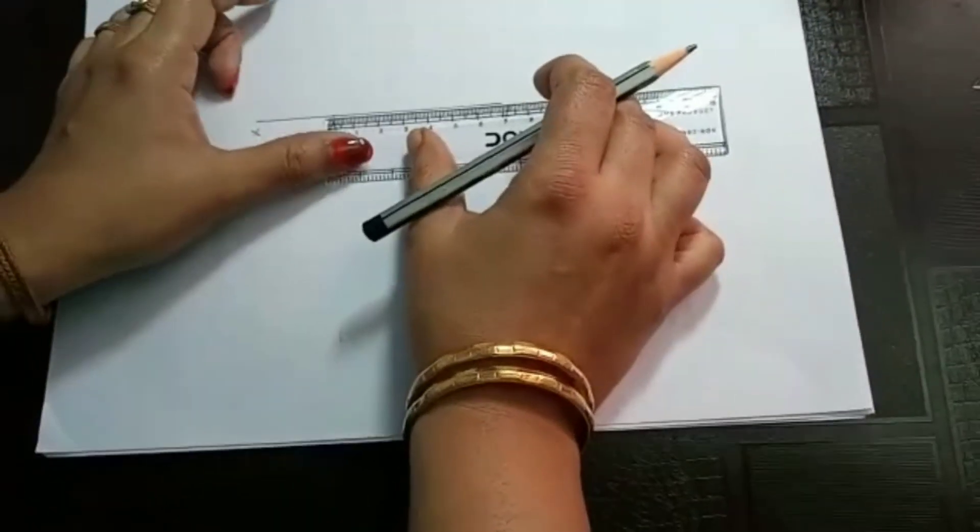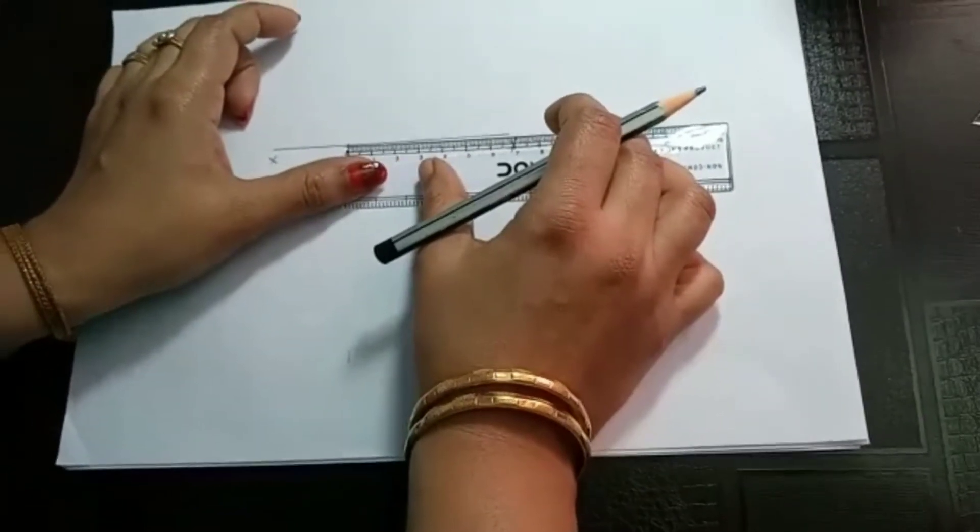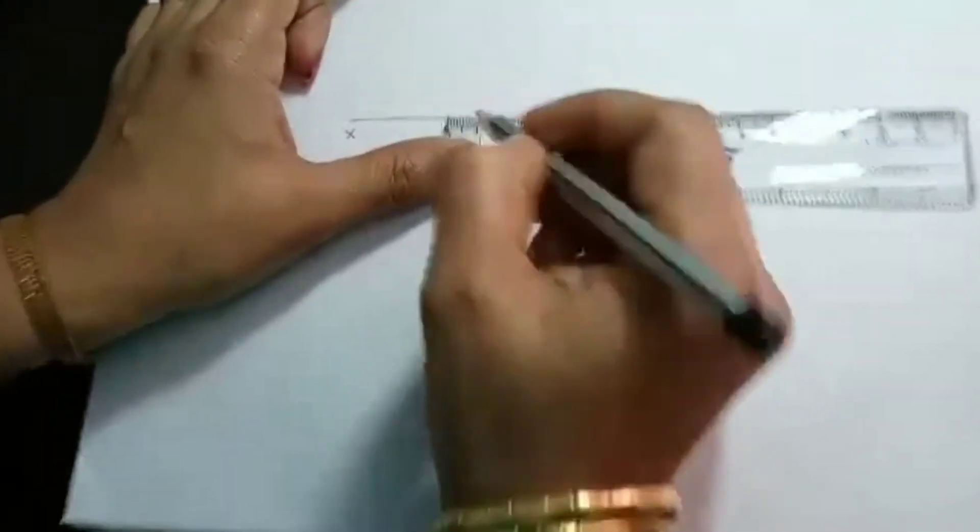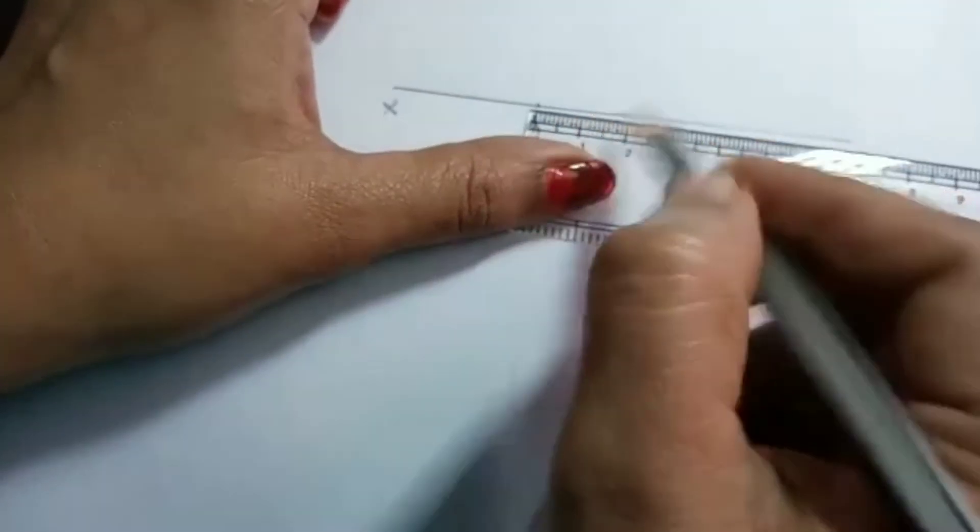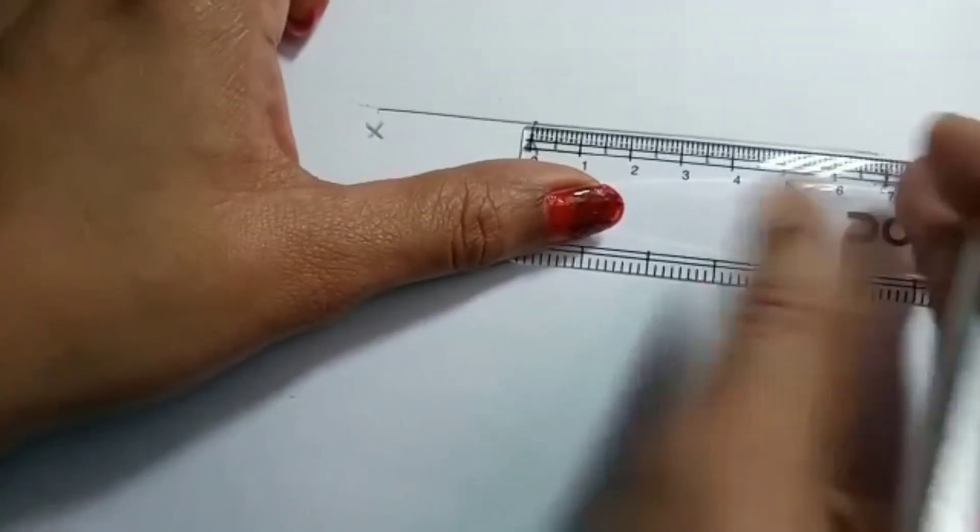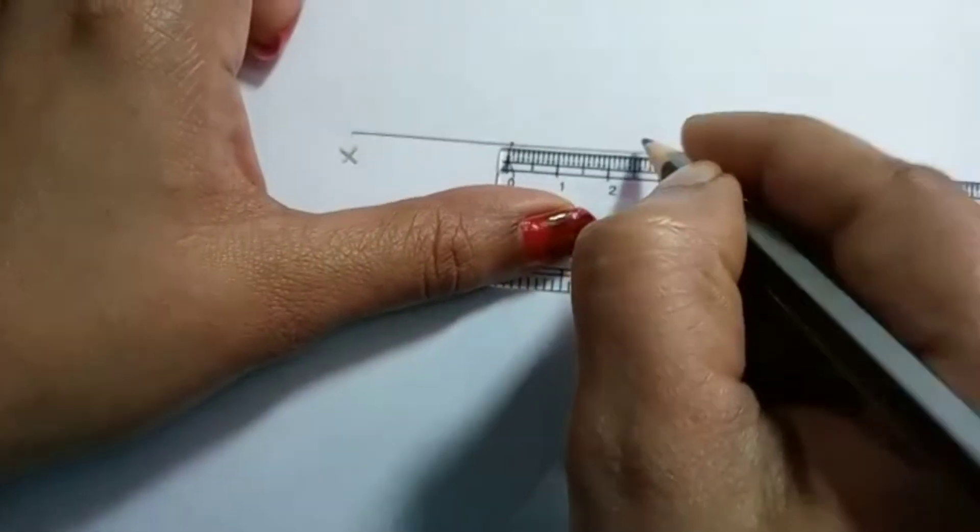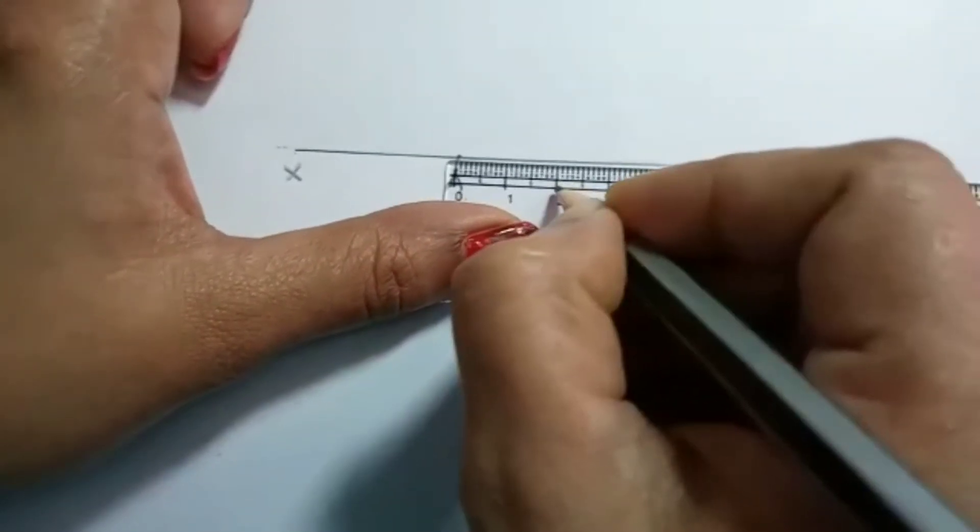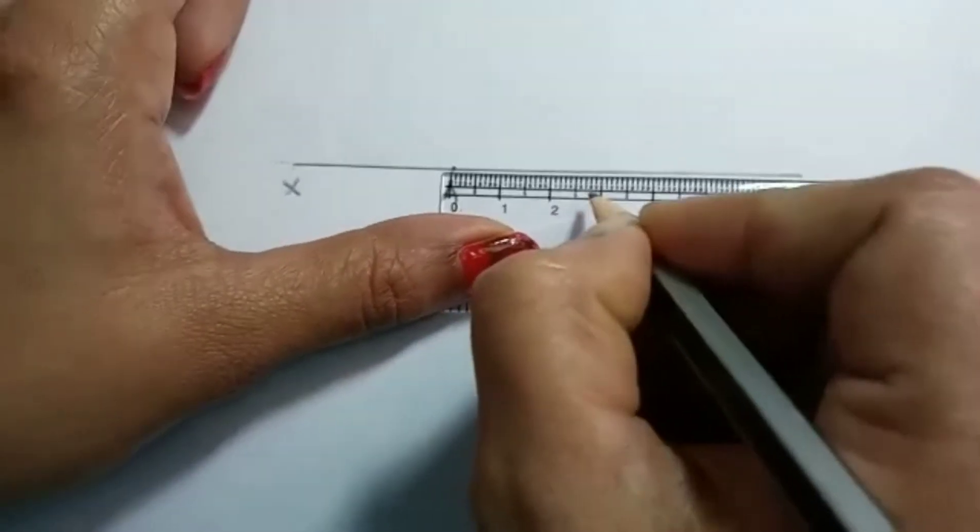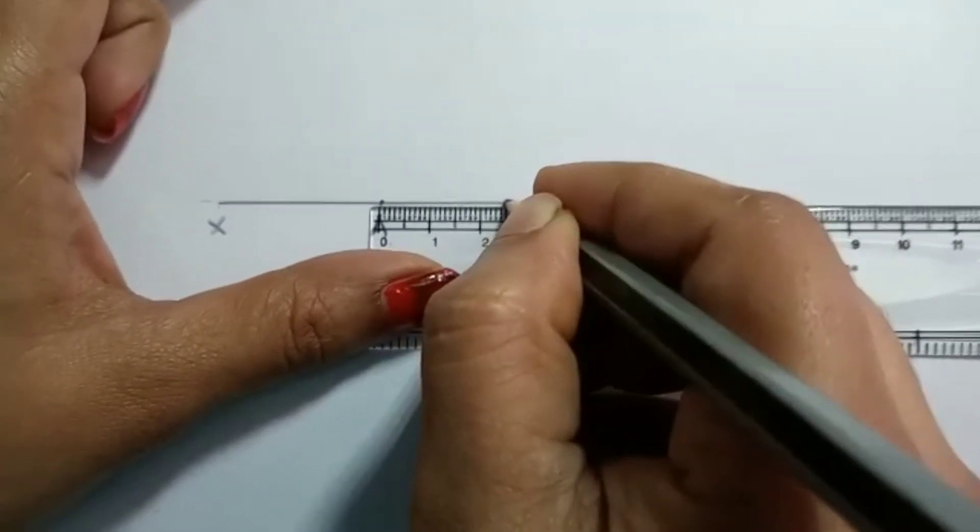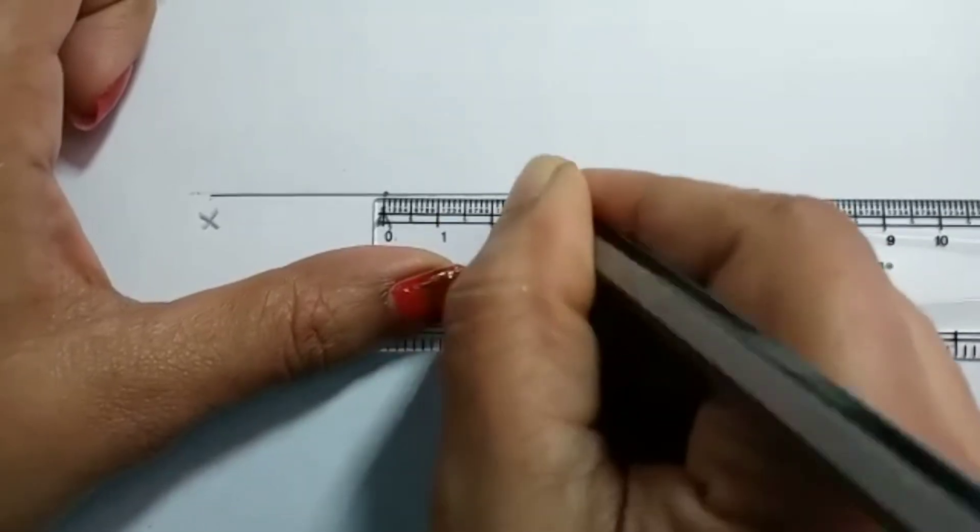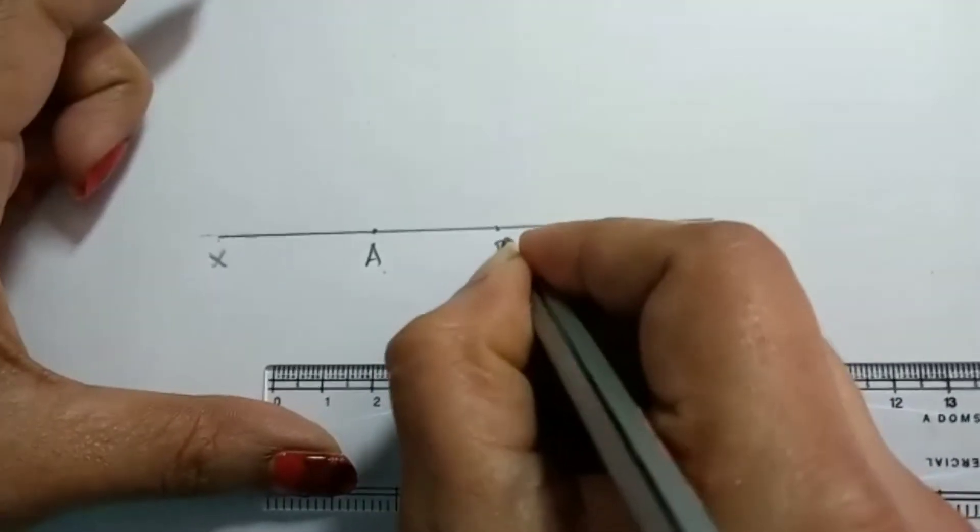So here this is 2.5 cm. Just measure that one. So here there is a point A. From that we have to measure 2.5 cm. So it comes here. So it is not 3, it is between 2 and 3. So in between there is a middle line, the smallest small one. So there you mark one point and that will be your B.